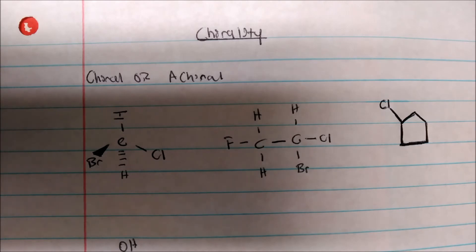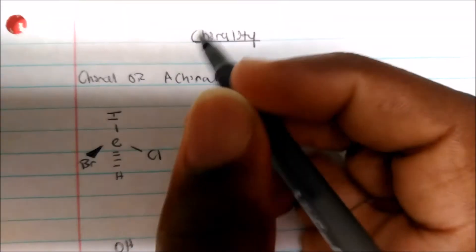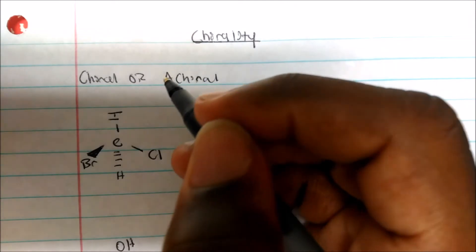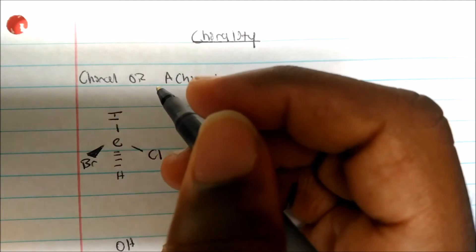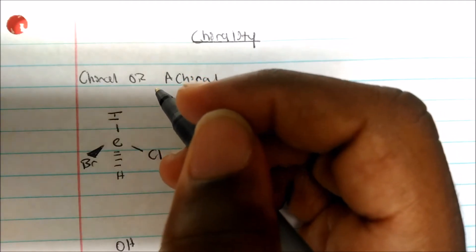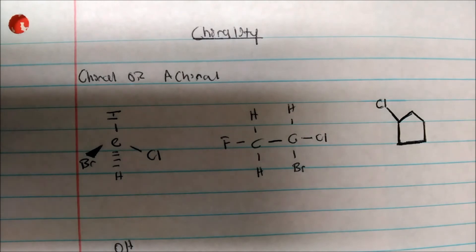Chirality usually pertains to carbon, which could form four bonds. That is usually a chiral center or chiral atom. So how could we identify if a molecule is chiral, achiral?